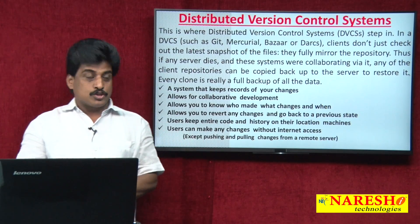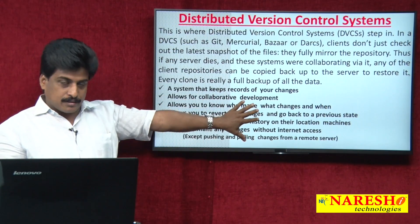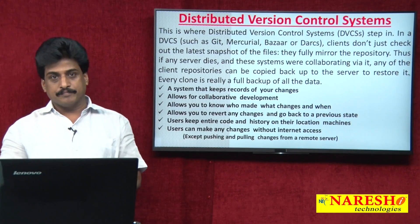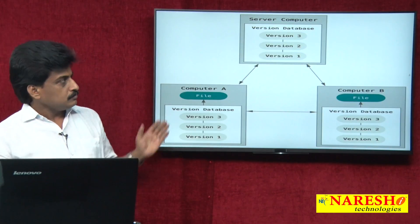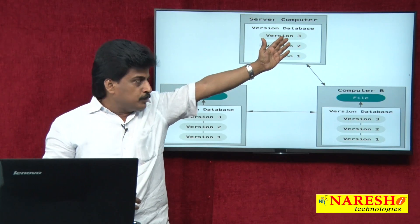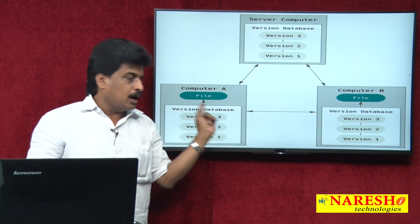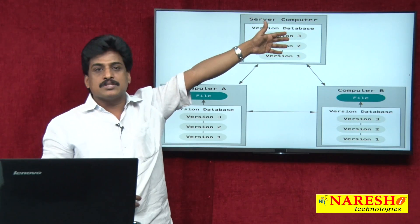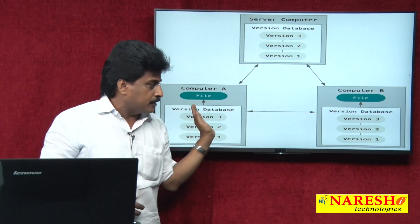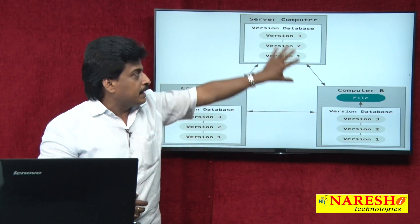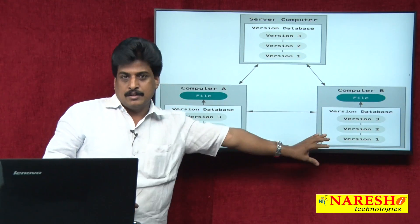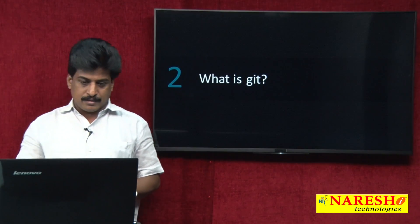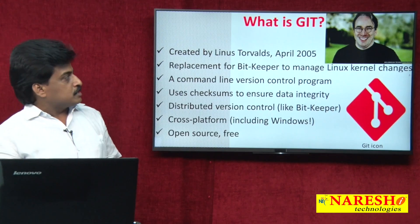This is the Git version control system architecture, very useful for developers and testers. It shows a server and multiple computers interconnected. Every change is pulled into the server. If there is no internet connection, work can continue between local computers, but pulling to the central server is not possible.